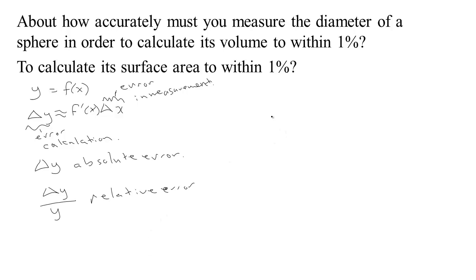So here's an example. We're asked how accurately must you measure the diameter of a sphere in order to calculate its volume to within 1%? So we see this 1%, that's 1 in 100, that's some kind of fraction, some comparison. So we're talking about relative error in this case.